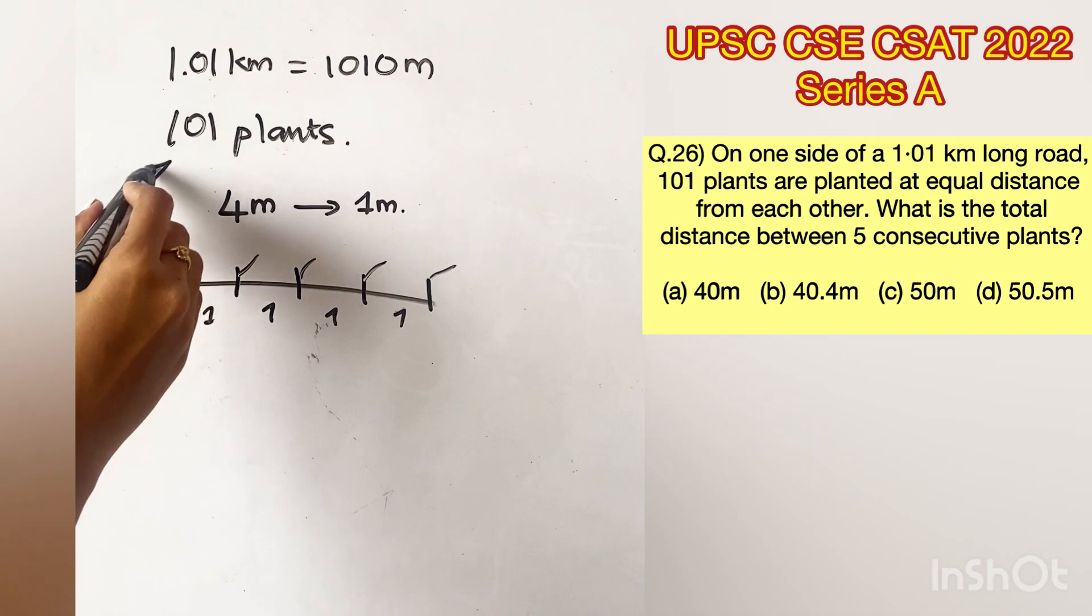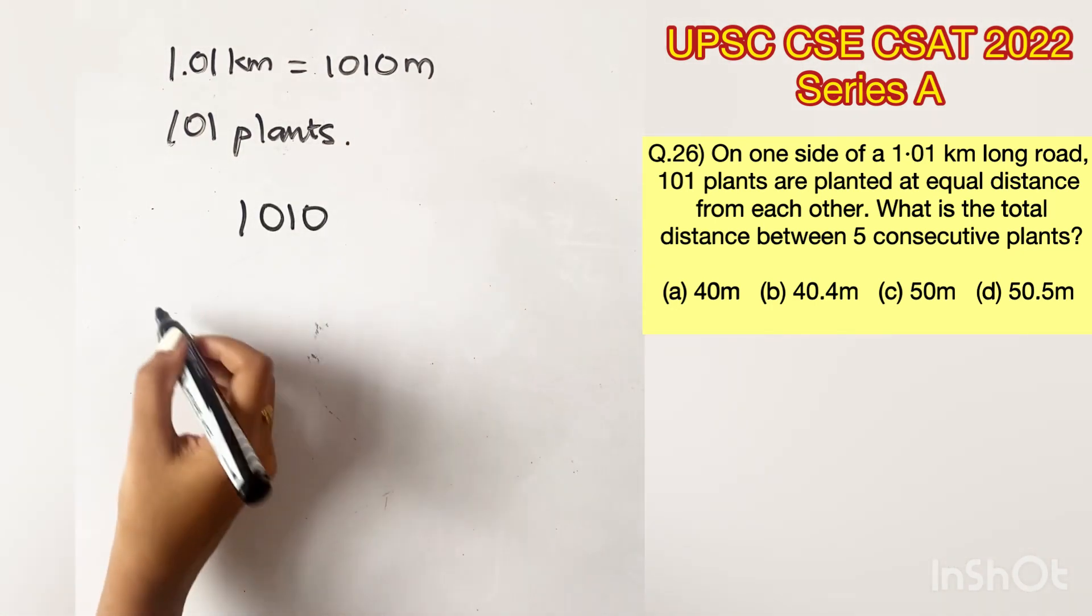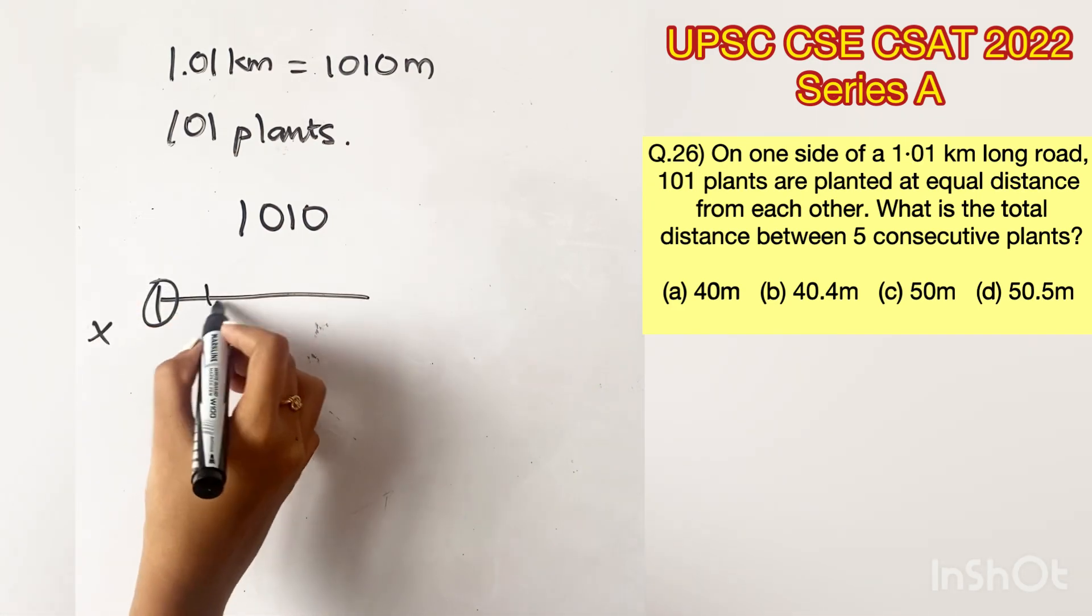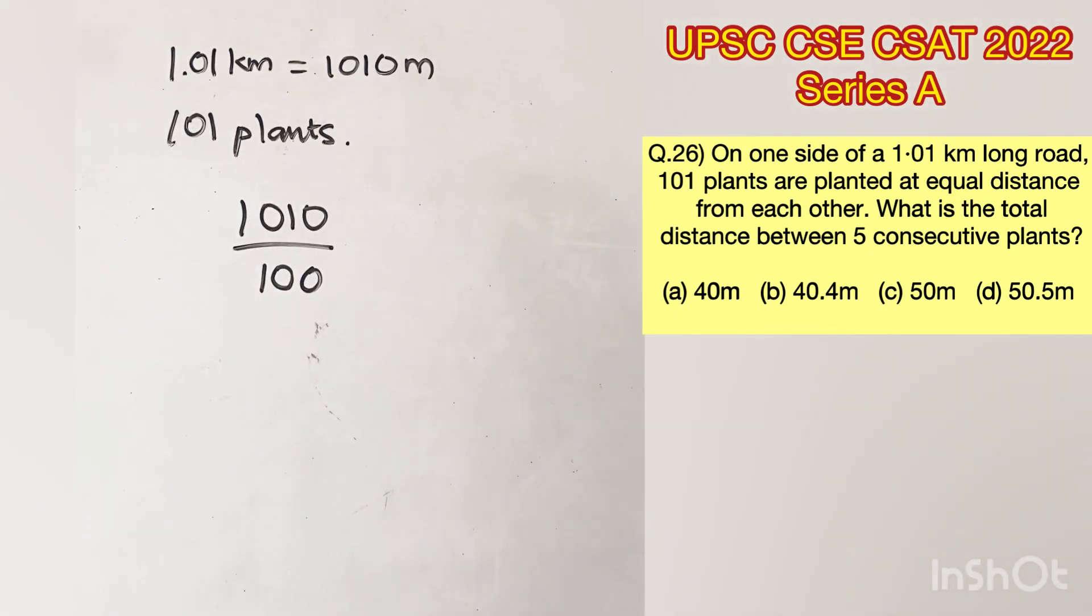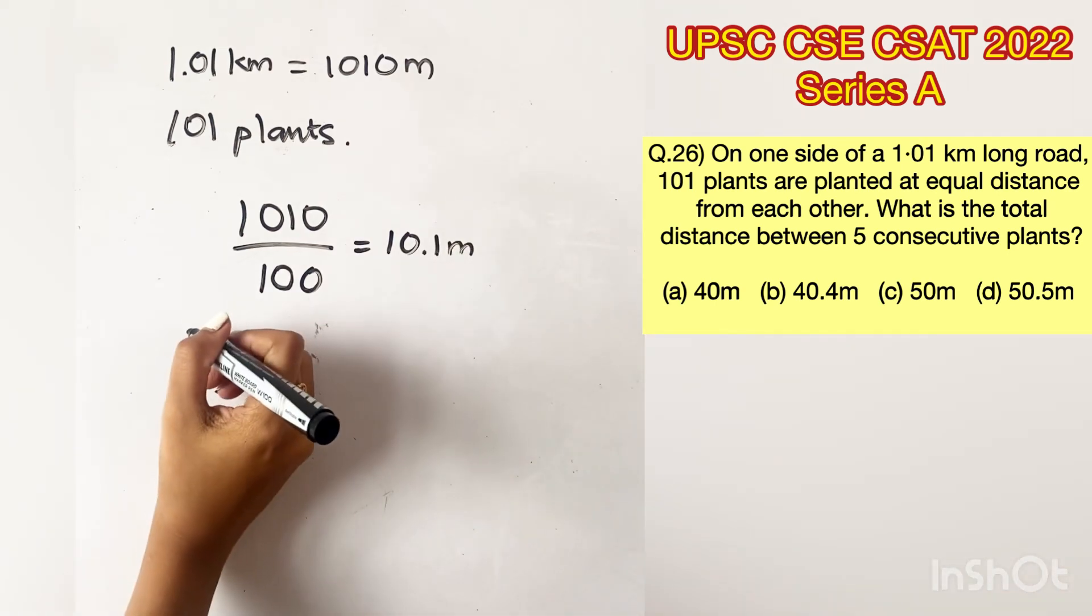That is why we are following the same logic here. We are considering that the first plant is already placed at the beginning of the road. So the number of plants remaining from 101 will be 100. This is the reason why we are dividing 1010 by 100 which will give us 10.1 m. So there is a 10.1 m distance between each plant.